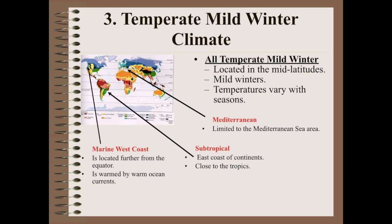The temperate mild winter climate focuses on mild winters — not as cold in winter time. There are three examples: Mediterranean, subtropical, and marine west coast. The Mediterranean focuses on areas near water, like near Greece — not very hot, not very cold winters, more mild. The subtropical would be in areas like the east coast of South America or Asia's east coast — it's close to the tropics but not as hot and rainy.